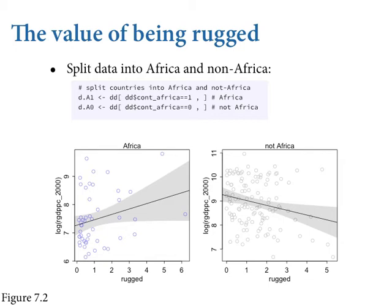But here's what we're going to explore: the impact of ruggedness depends upon continent. Splitting the sample — African countries on the left, the rest of the world on the right — we fit two separate linear regressions. The slope is positive in Africa, with a lot of uncertainty because there are fewer countries, but the posterior median is definitely positive and the 95% interval barely hits zero. The rest of the world still shows the same reliably negative relationship. This is a classic interaction effect where the relationship between the outcome and ruggedness depends upon whether you're in Africa or not.